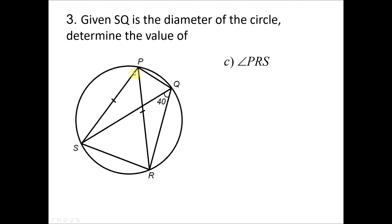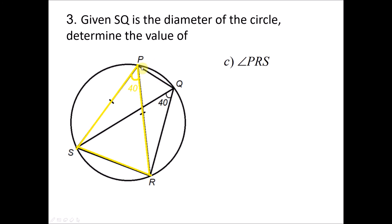Question 3C: We are looking for angle PRS. From question 3A, one angle is 40°. Since two sides of this triangle are radii of equal length, it is an isosceles triangle, so angle PRS equals the other base angle. Therefore angle PRS equals 180° minus 40° divided by 2, giving PRS equals 70 degrees.